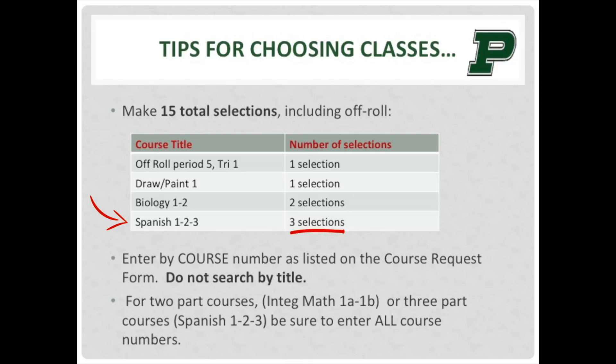Once your 15 selections have been made on the CRF, you are now ready to enter them online. Be sure to enter the course number exactly as listed on the CRF. Do not search by course title — doing so may result in requesting a course at another high school. Also, please be aware that if you enter less than 15 selections, the system will be forced to choose the remainder of your classes.